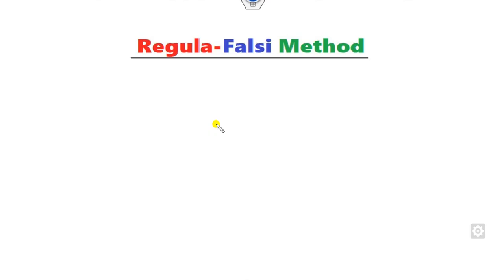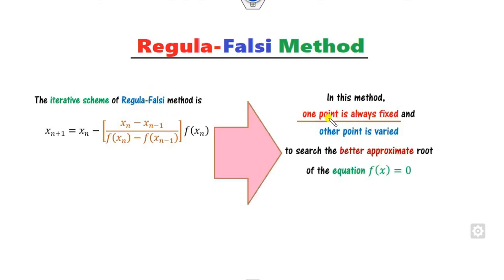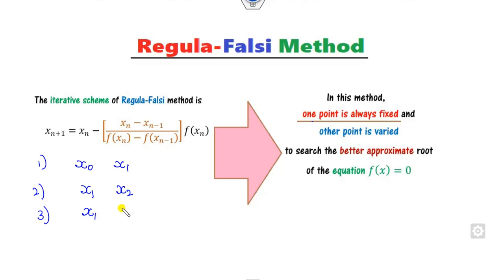As described in our last lecture, the intuitive scheme for the Regula Falsi method is shown here. The major point in this method is that one point is always fixed and we find the other point. If you have initial points x1 and x2, in the next iteration one point is fixed — say x1 — and you move to find the second point, and so on. The one point is always fixed and you vary the other to find a better approximate root.